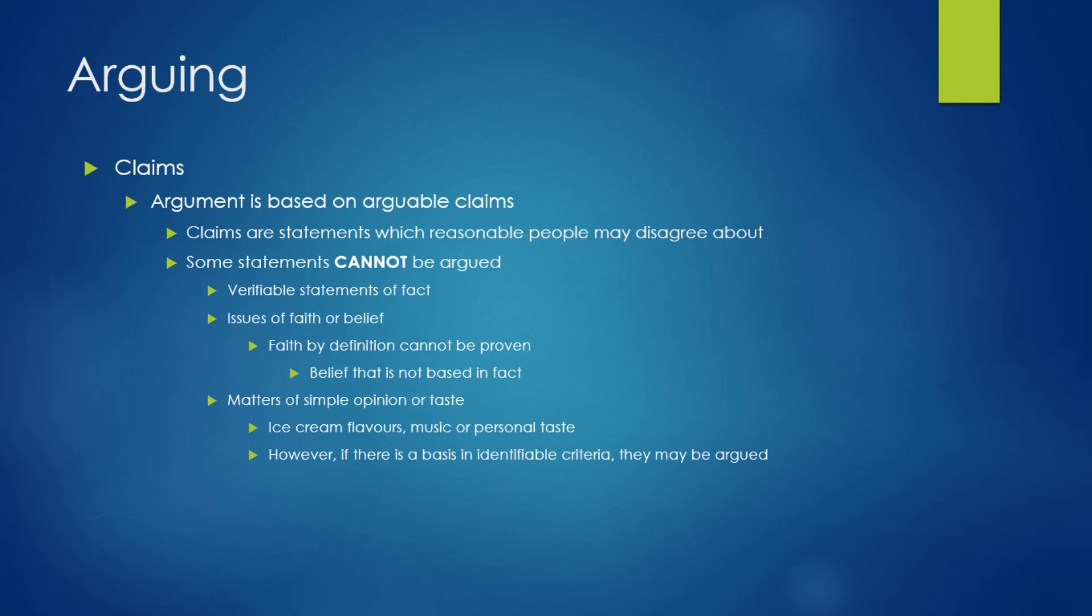Now if there is a basis in an identifiable criteria, then they can be argued. You could say orange roughy is the best fish. Well, that's not arguable, but if you said orange roughy is the best fish because it has 89 calories per serving and no saturated fats, well that at least can be argued. The first statement doesn't have any identifiable criteria. It just comes down to taste. The second statement has criteria. How many calories per serving and does it have saturated fats? That can then be argued.